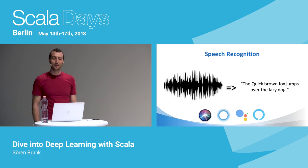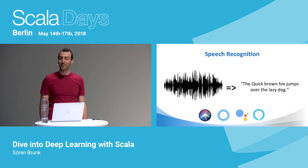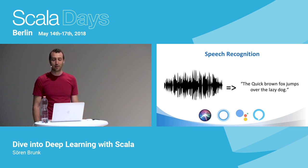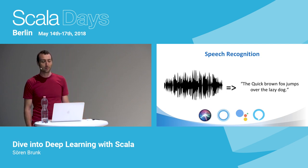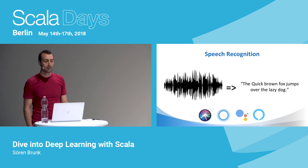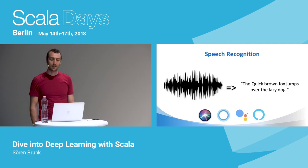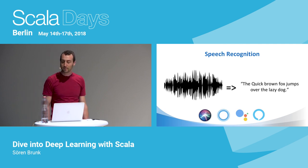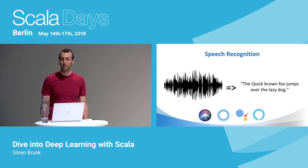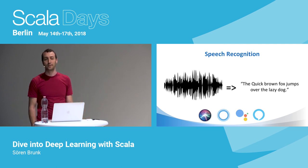Another very successful domain for deep learning is speech recognition. Given audio as input, a neural network predicts the spoken text. The most visible applications are voice assistants like Siri, Alexa, and so on — they all use deep learning to recognize your voice, and the recognition part actually works quite well.